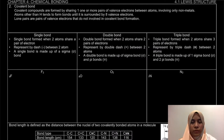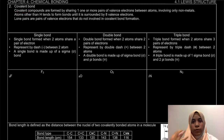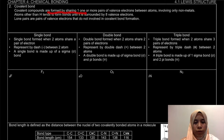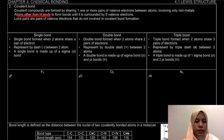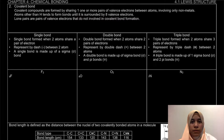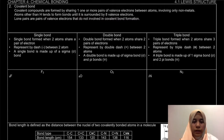So what is actually a covalent bond? A covalent bond, or covalent compound, is formed by sharing one or more pairs of valence electrons between atoms, usually involving non-metals. Atoms other than hydrogen tend to form bonds until surrounded by 8 valence electrons, based on the octet rule. Hydrogen achieves a duplet of 2 electrons.